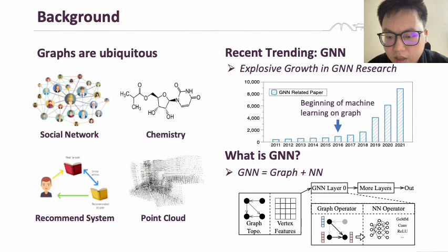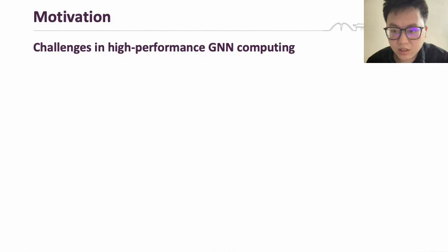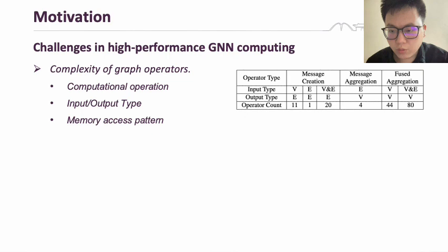Despite their increasing popularity, high-performance GNN computing remains a challenging field due to two key obstacles: the complexity of graph operators and the variability of graph data. Currently, GNN frameworks support 116 graph operators with different computational operations, input-output types, and memory access patterns.